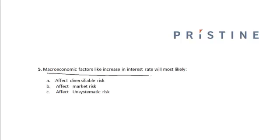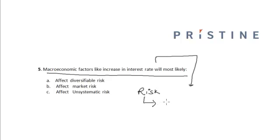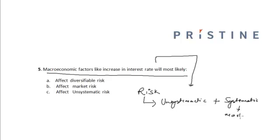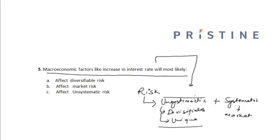The macroeconomic factors like increase in interest rate will most likely affect — but first we have to understand the components of risk. Risk can be divided into two parts: one is the unsystematic risk and second is the systematic risk. The systematic risk is also known as the market risk, and the unsystematic risk is also known as diversifiable risk or the unique risk.